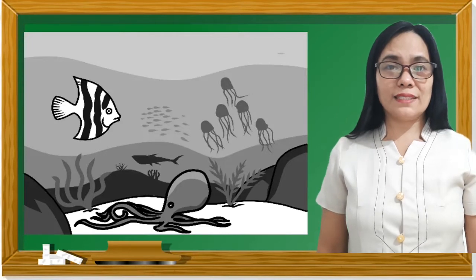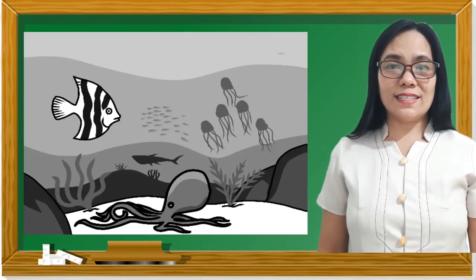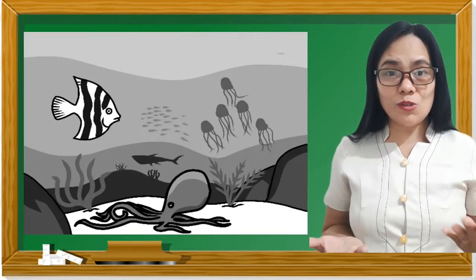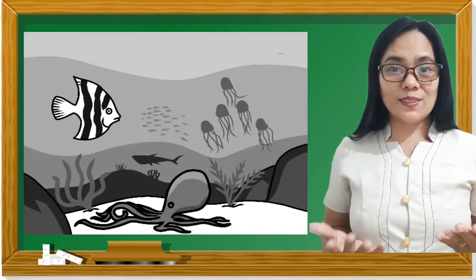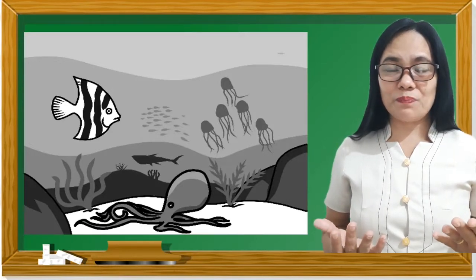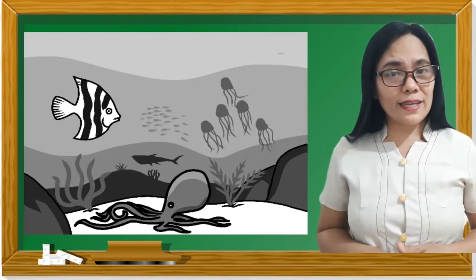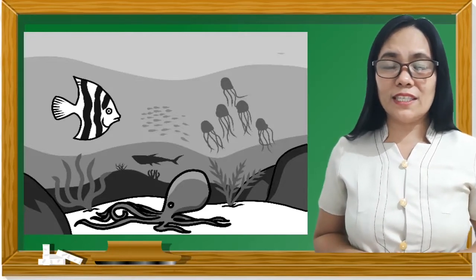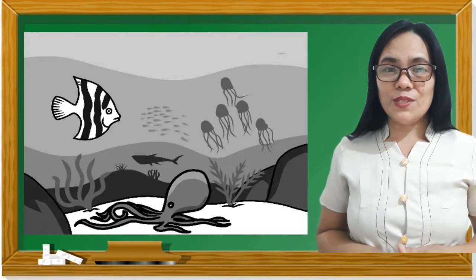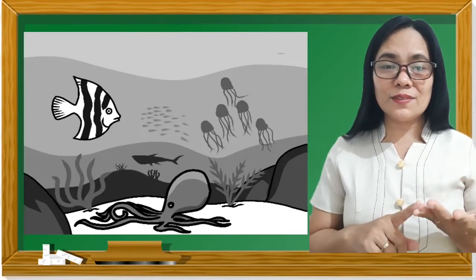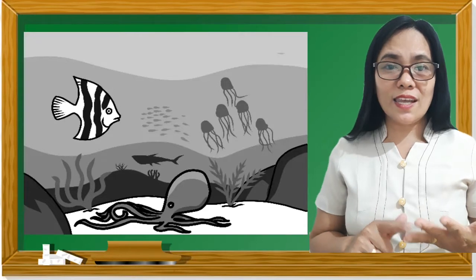What kind of environment is in the second picture? The answer is, it's an ocean. What organisms can be found in the ocean? The answer is fish. And what are the environmental factors affecting the life cycle of organisms in the ocean? The answers are food, shelter, and space.